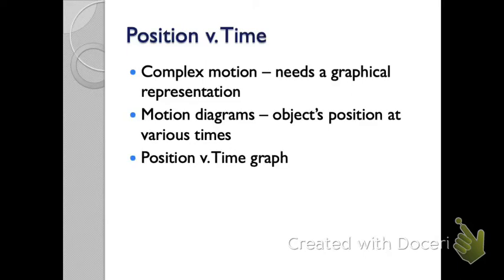So what we're going to start with today is called a position versus time graph. This means the graph is going to show us what's happening to the object's position, how the position's changing over time.